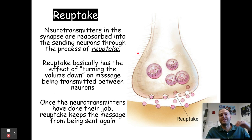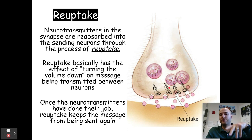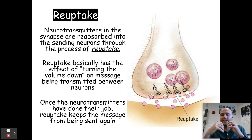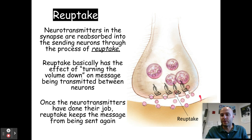When a neurotransmitter has finished sending its message, it will be released from the receptor site. Most often, something called reuptake occurs, where those neurotransmitters are sucked back up into the sending neuron. This has the effect of turning down the volume on the message being transmitted between neurons. Once the message has been sent, they don't need to hang around anymore, so they are reuptaken back into the sending neuron. Some neurotransmitters may escape and eventually degrade, or enzymes change their structure so they can't function. But generally, reuptake occurs and they're brought back and can be reused.